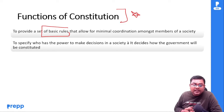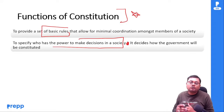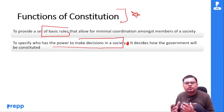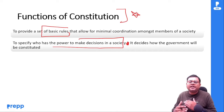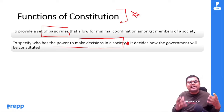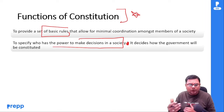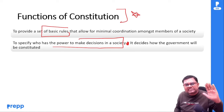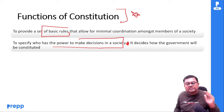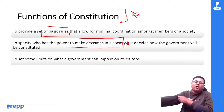Second function होता है: to specify who has the power to take decisions in a society, and it also decides how the government will be constituted। Society में सभी groups यह चाहेंगे कि rules हम बनाएं, क्योंकि सबको अपने interest serve करने होते हैं। Decision making power, law making power किसके पास होगी, यह decide करेगा constitution। जैसे India में parliament के पास law बनाने की power है। Government किस तरह से constitute होगी, elections होंगे — यह process आपको मिलेगा in the constitution।